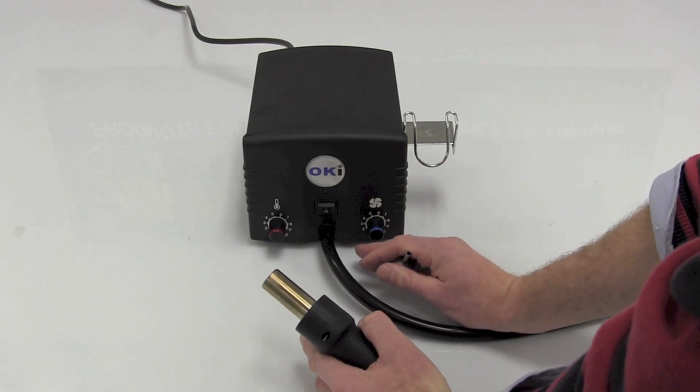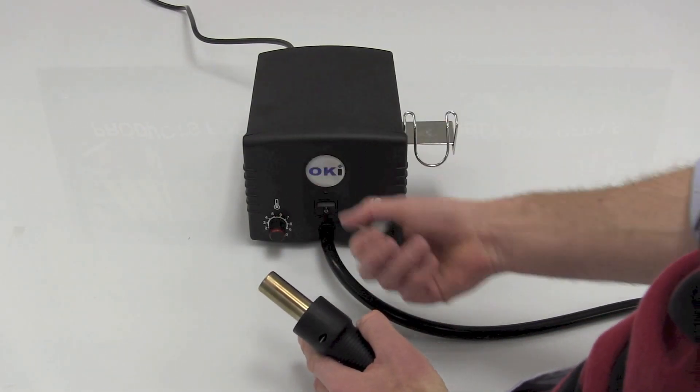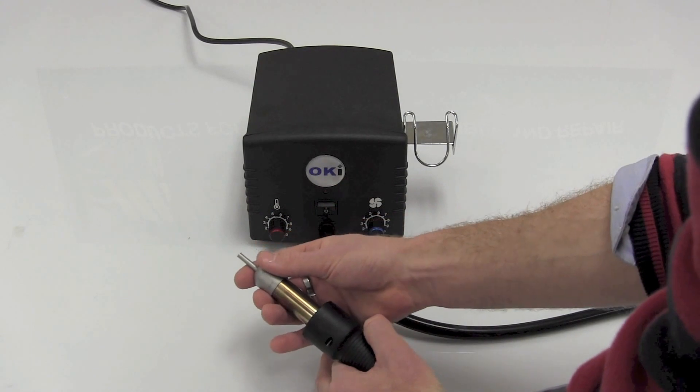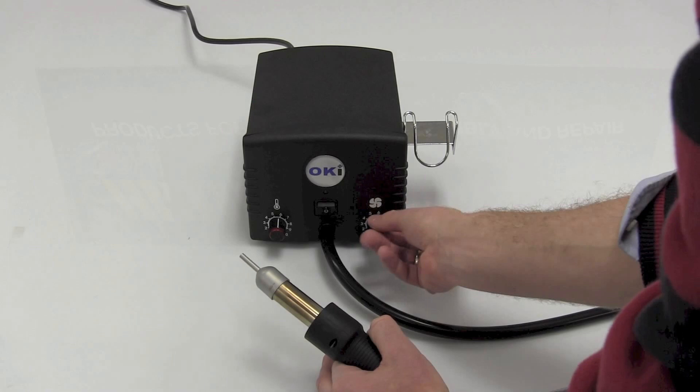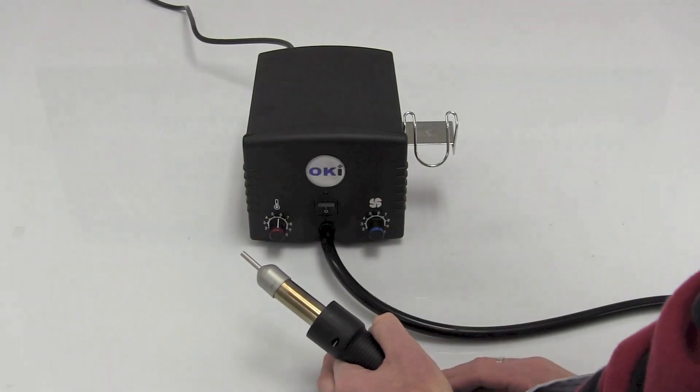Nice thing on the OKE unit, which you don't see on a lot of other low-cost systems, is if I set this to approximately 600F, and I've got a low flow, and I dial that all the way up, this tip temperature is going to remain constant.